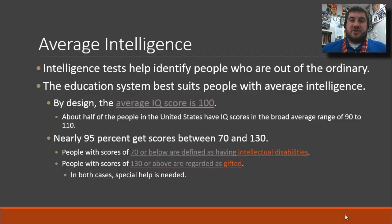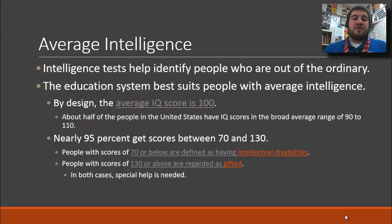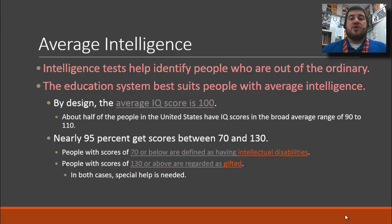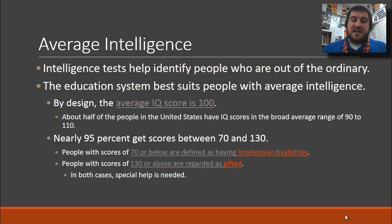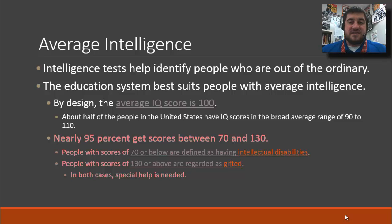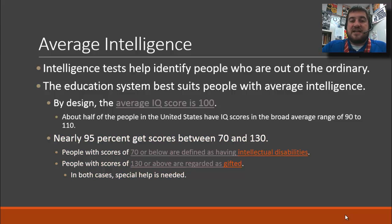By design, the average IQ score is 100 — that is considered average intelligence on an IQ test. About half of the people in the United States have IQ scores from 90 to 110, considered low average to high average. Intelligence tests help identify people who are out of the ordinary: those below 70 are identified as intellectually disabled, and those above 130 as gifted, since standard education best suits people with average intelligence. 95% of people score between 70 and 130, and in both extreme cases, special help is needed.